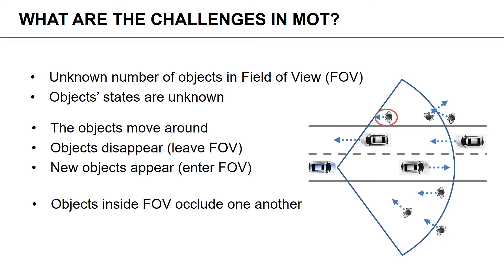We are also challenged by the fact that sometimes objects occlude other objects. In this example we have a pedestrian, again highlighted by a red ellipsis, that is from the sensor's point of view hidden behind the car. Because the pedestrian is hidden or occluded, it cannot be detected.